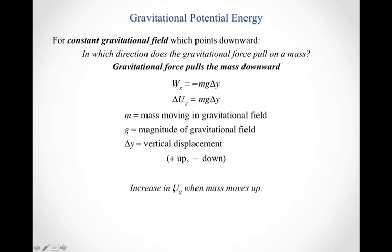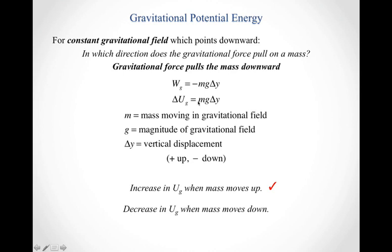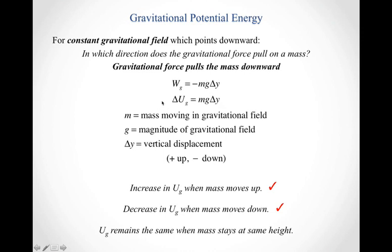We know we need the gravitational potential energy to increase when the mass moves up. When the mass moves up, the vertical displacement is positive. Positive delta y times positive g times positive mass gives a positive delta U — an increase in gravitational potential energy. That checks out. Second, we need a decrease in gravitational potential energy when the mass moves down. When the mass moves down, delta y is negative. Negative times positive times positive gives a negative delta U, so the potential energy is decreasing. That checks out. Gravitational potential energy remains the same when the mass stays at the same height. If it stays at the same height, its vertical displacement is zero, so the change in gravitational potential energy is zero. Sure enough, gravitational potential energy remains the same if the height doesn't change.